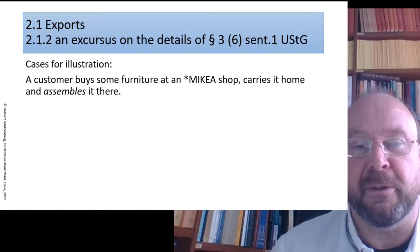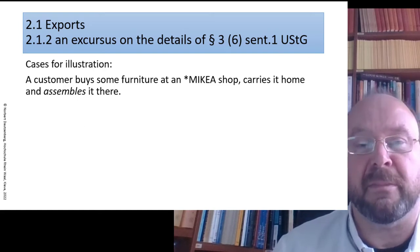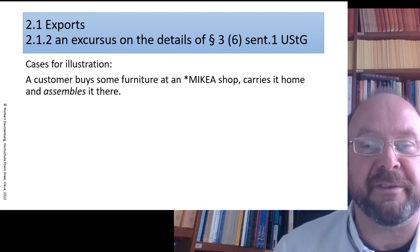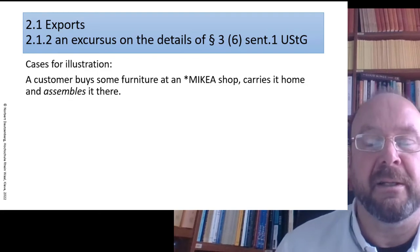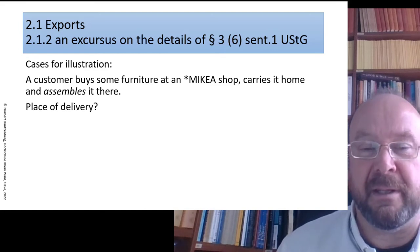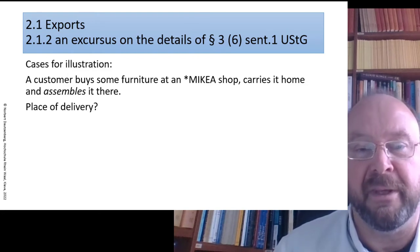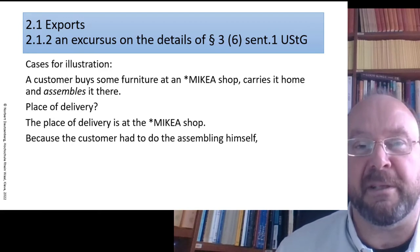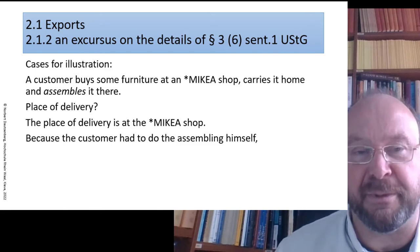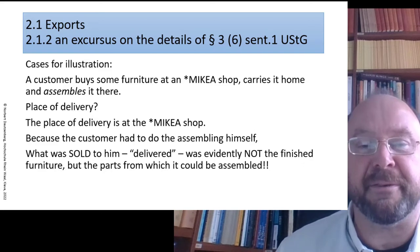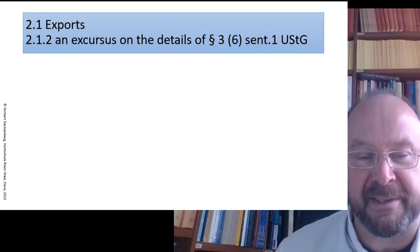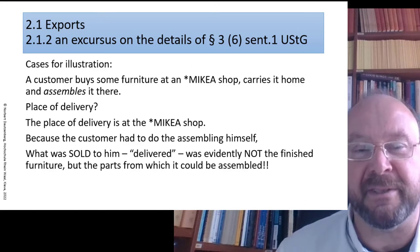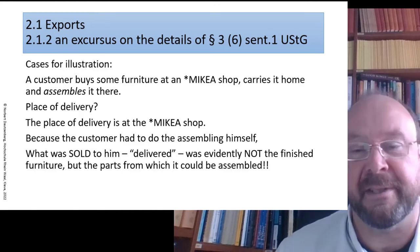Another case: you know a shop — which I'll call "Mickeia" with respect to brand names — where a customer buys some furniture, carries it home, and assembles it at home. Place of delivery? The furniture is only finished at home, but what you bought is not the furniture but only the material you need to assemble the furniture yourself. So the good in question was the material necessary for construction, and these parts already existed at the Mickeia shop and were transported home. So the place of delivery is in the shop.